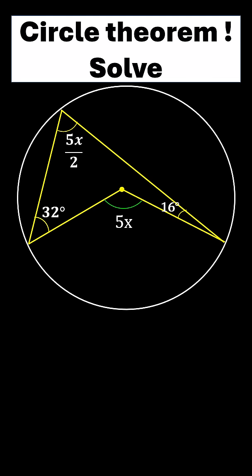So therefore, 32 plus 16 plus the reflex angle at the center, which is 360 minus 5x, plus the 5x divided by 2 is equal to 360.